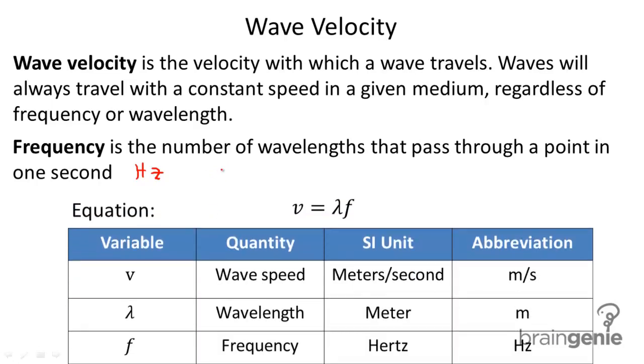Here's the equation for wave velocity. V equals lambda times f. Lambda is, of course, wavelength. It's the length of one wavelength. And frequency is the number of wavelengths that pass through in one second.